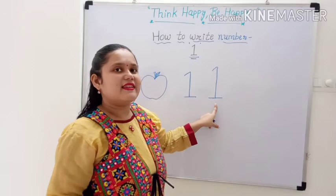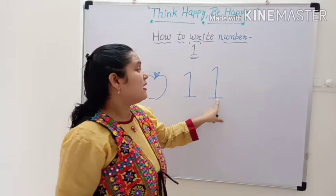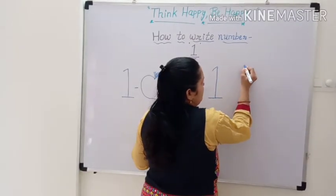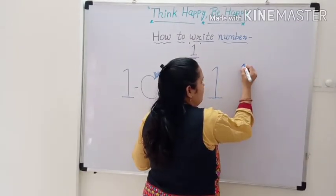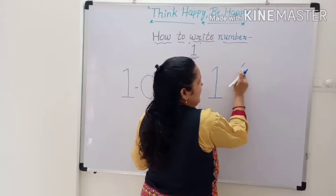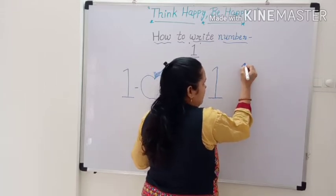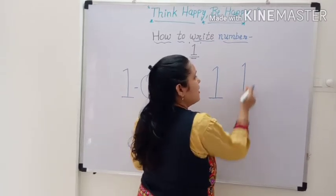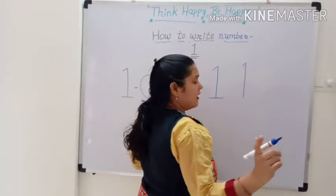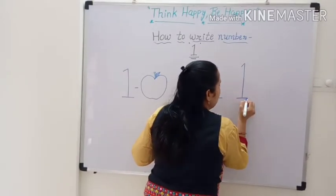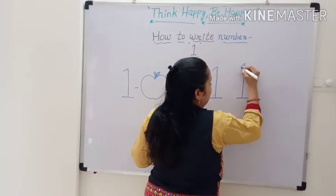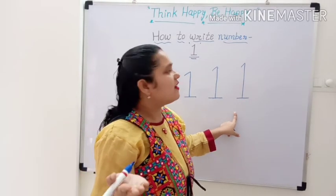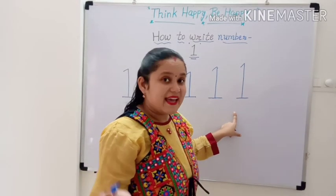It's very easy. Now let's see how to write. First, we make a small slanting line. After that, draw a standing line down. Then draw a sleeping line. It makes number one. Number one. It's very easy.